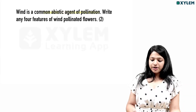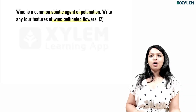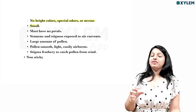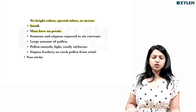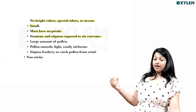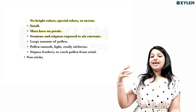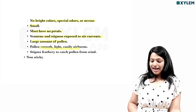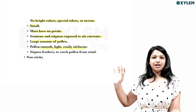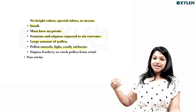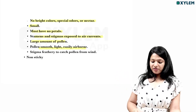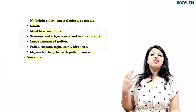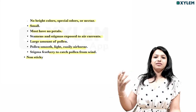Wind is a common abiotic agent of pollination. Four features of wind-pollinated flowers: they have no bright color, no special odor, and are very small. Petals are reduced and exposed to air currents. Pollen is smooth, light, and easily carried by air. Stigma is feathery to catch pollen from the wind; pollen grains are non-sticky.